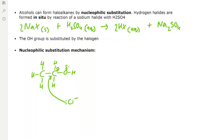The lone pair of electrons causes the carbon-oxygen bond to break, so the electrons from the bond go to the oxygen atom. We draw a curly arrow from the bond to the delta-negative oxygen atom. This means we form a halogenoalkane and hydroxide ions, which then react with the H⁺ from the hydrogen chloride to form water.